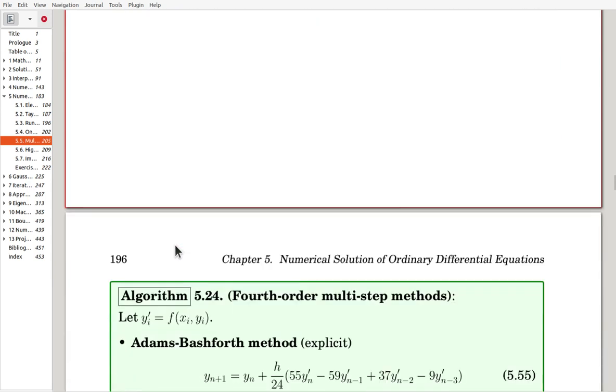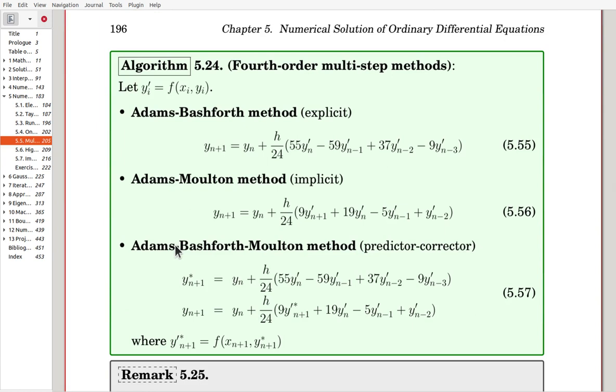We will see three examples for fourth-order multi-step methods. For simplicity of notation, we are using Y_i prime, which is the same as f evaluated at X_i, Y_i. First one is Adams-Bashforth method, which is an explicit method. Y_M+1 is just Y_M plus that linear combination of earlier values times h.